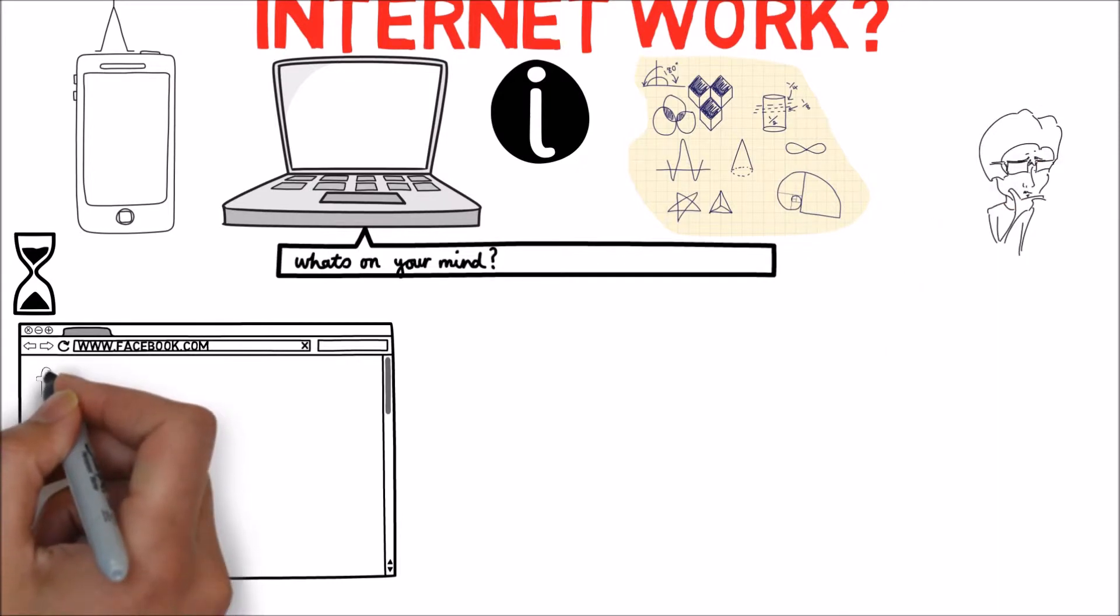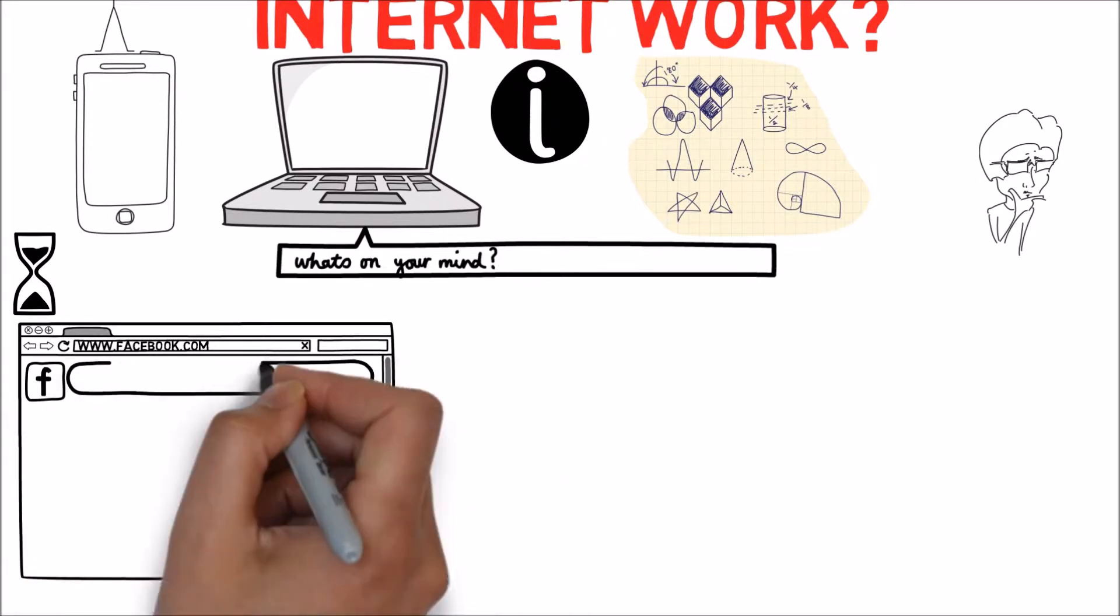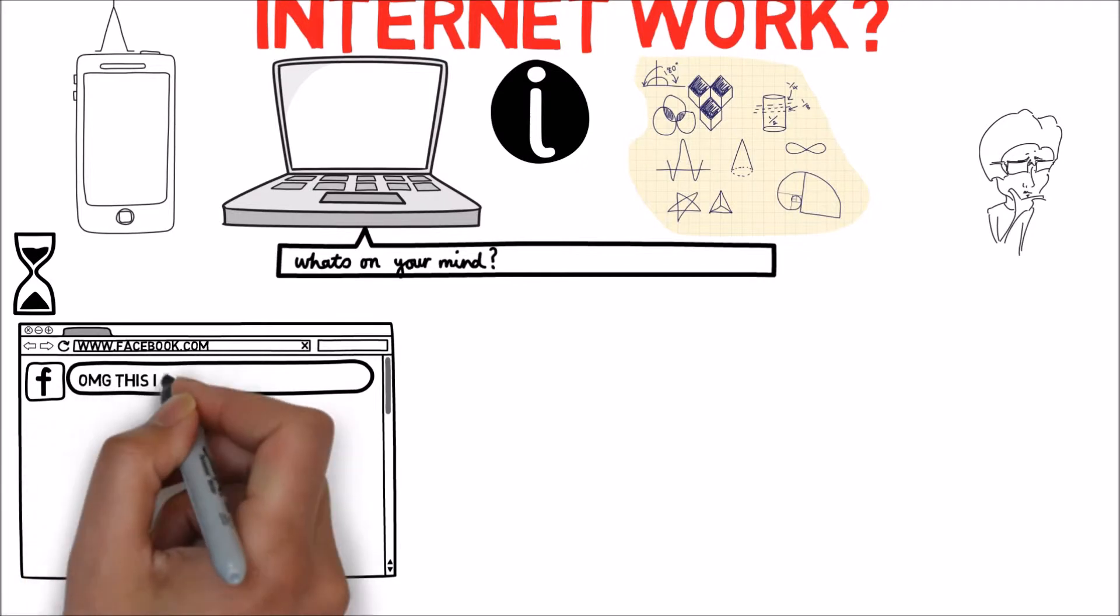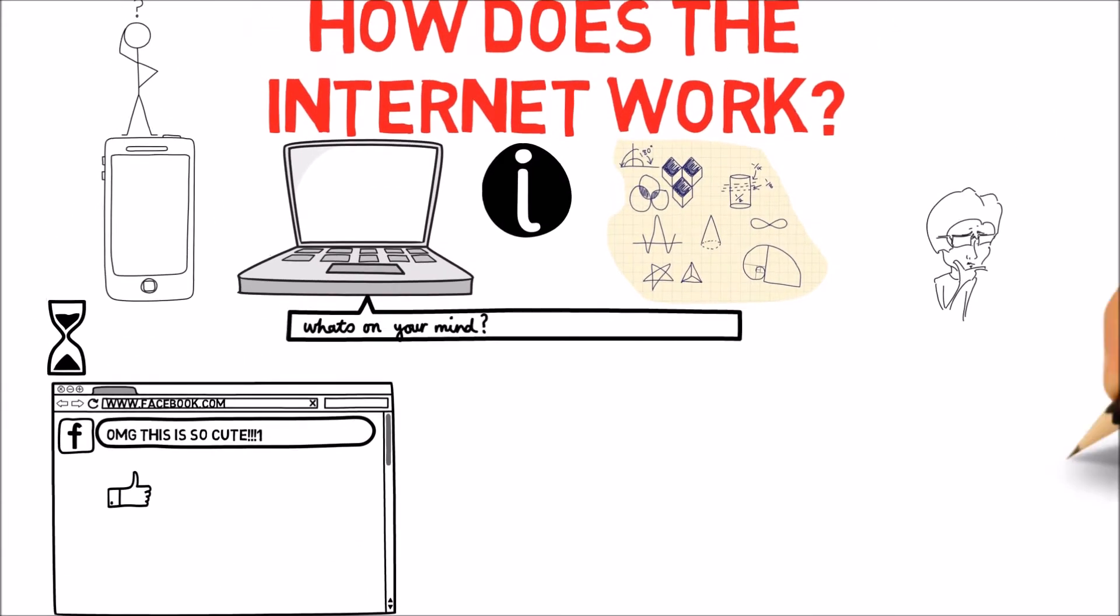In order for Facebook to be shown on our computer, the browser has to know what the page looks like, what text it has, how it is designed, whether it contains images, and so on.